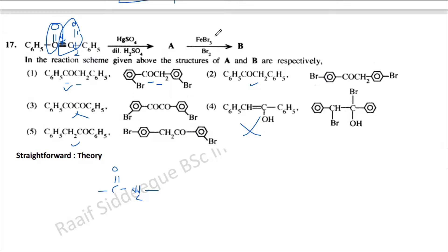And the second one is saying FeBr3Br2. So this is going to happen electrophilic substitution in the benzene ring. So here, when you have a CO, CH2 in both sides of benzene and here, there is benzene.